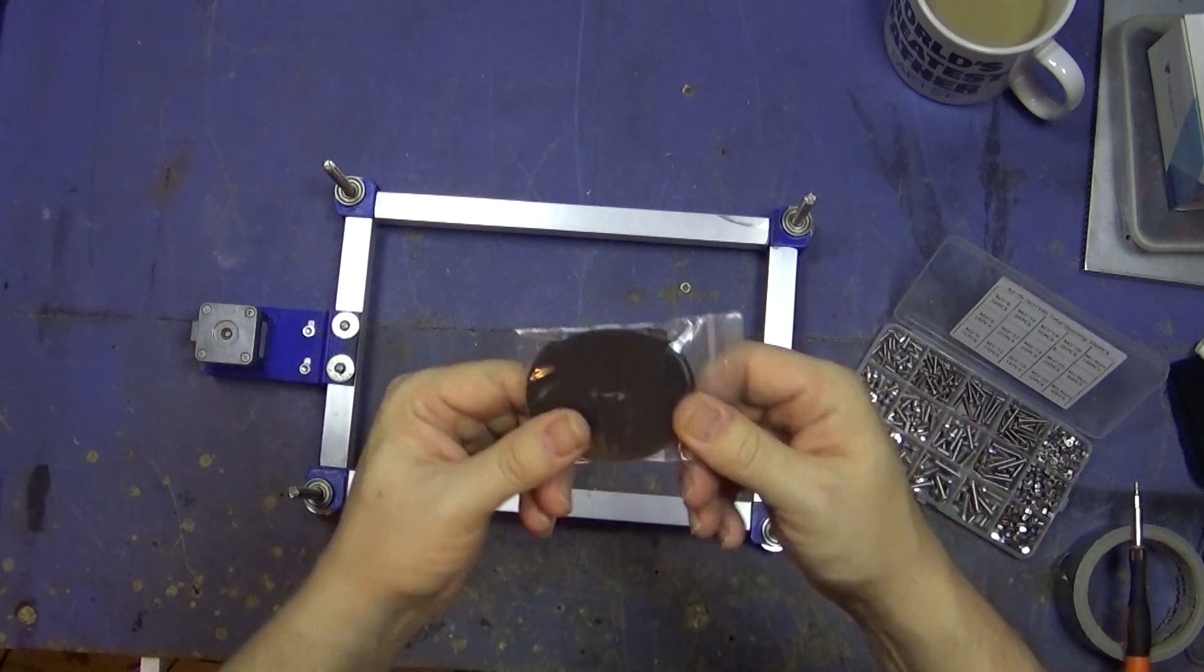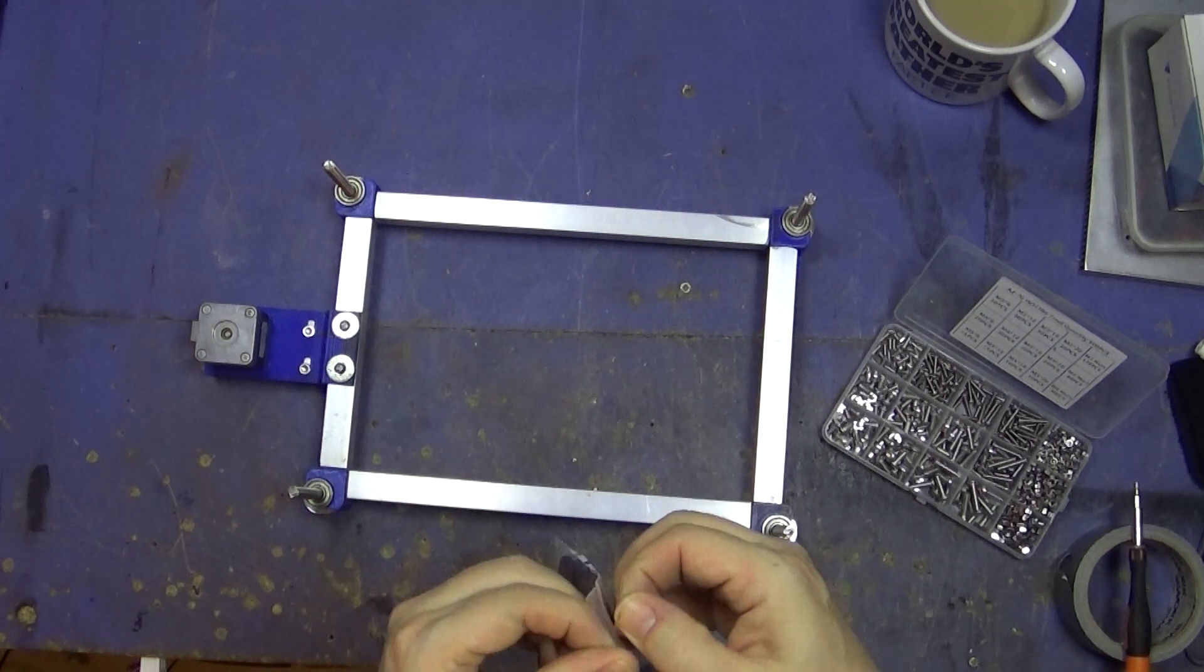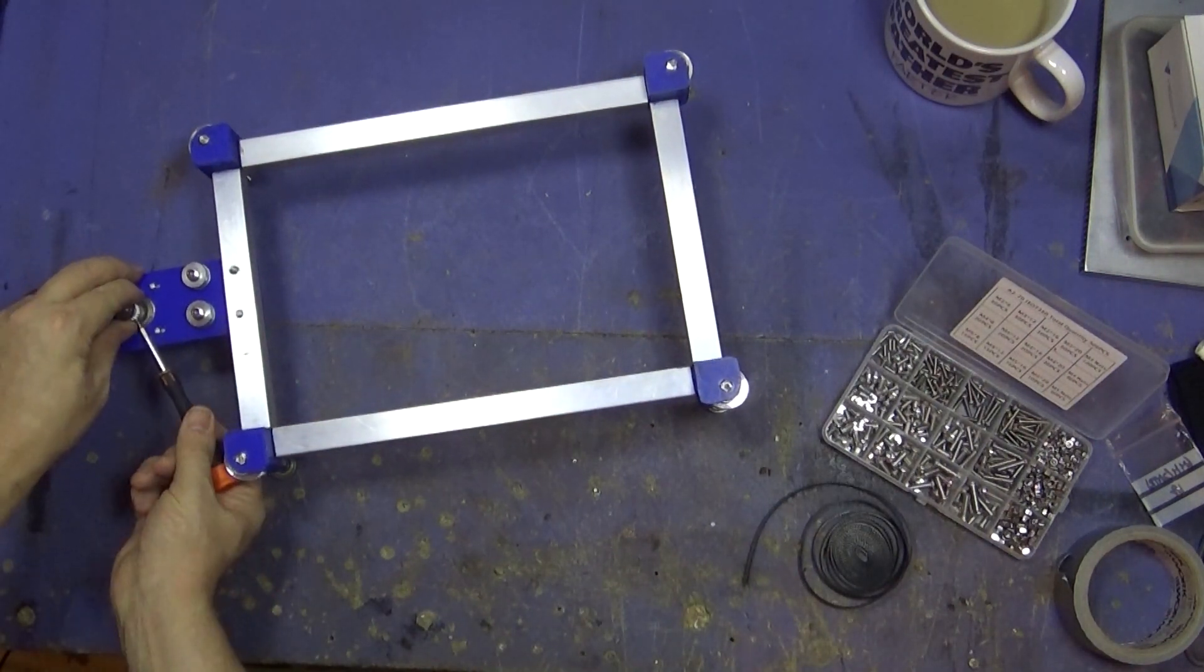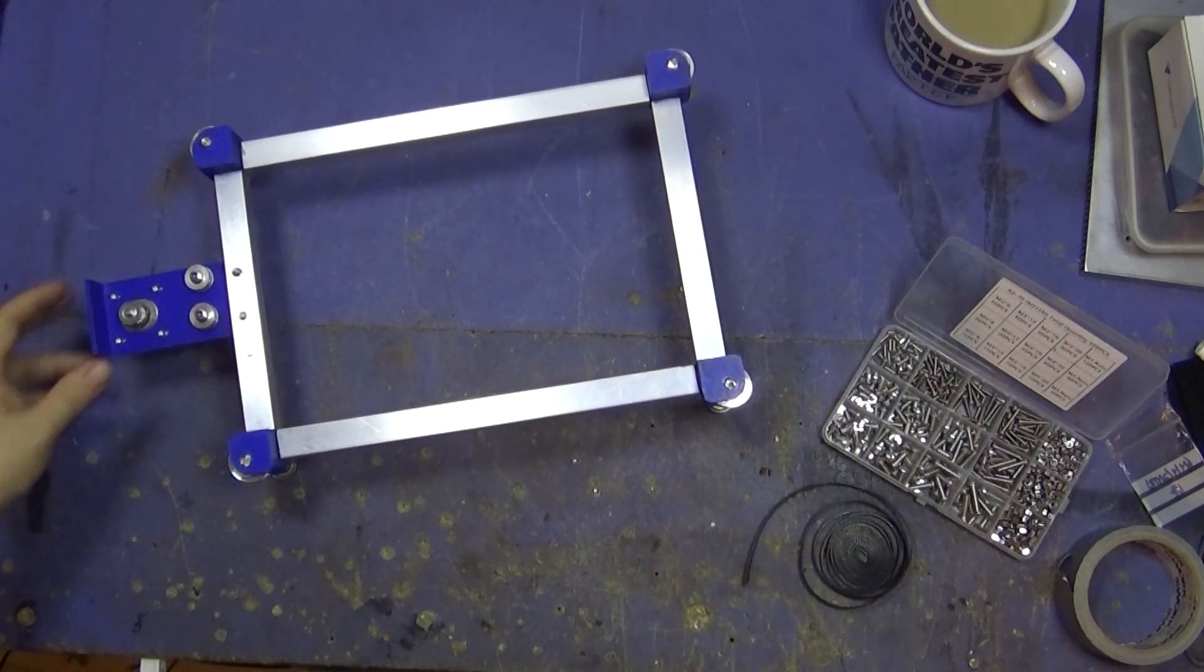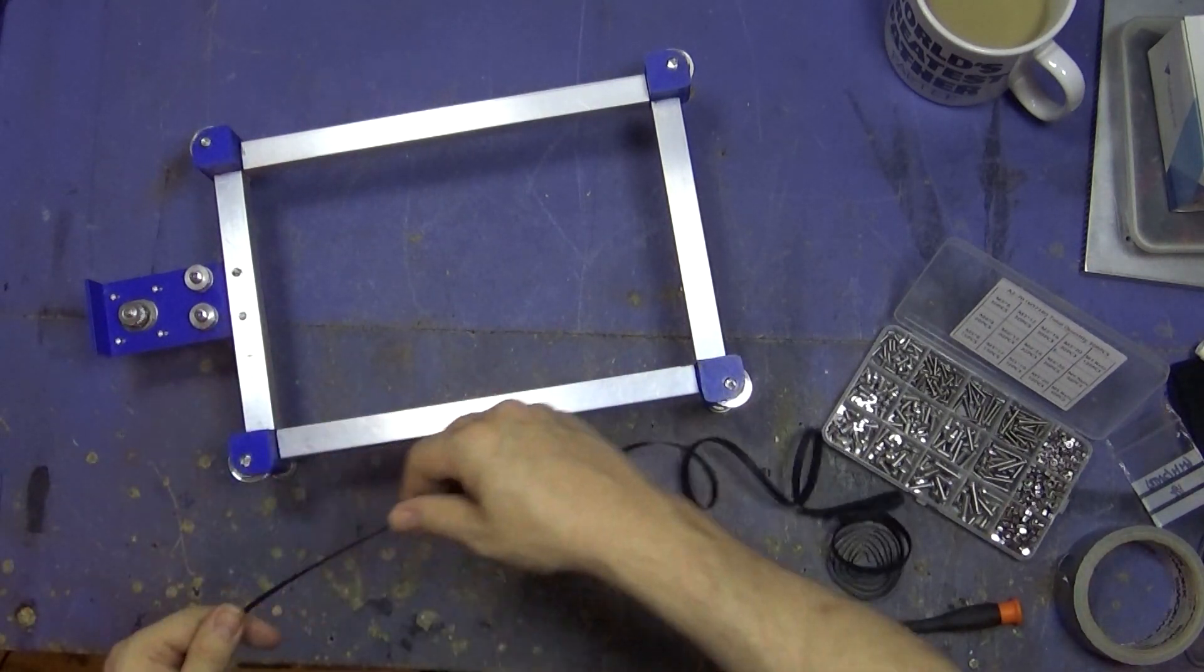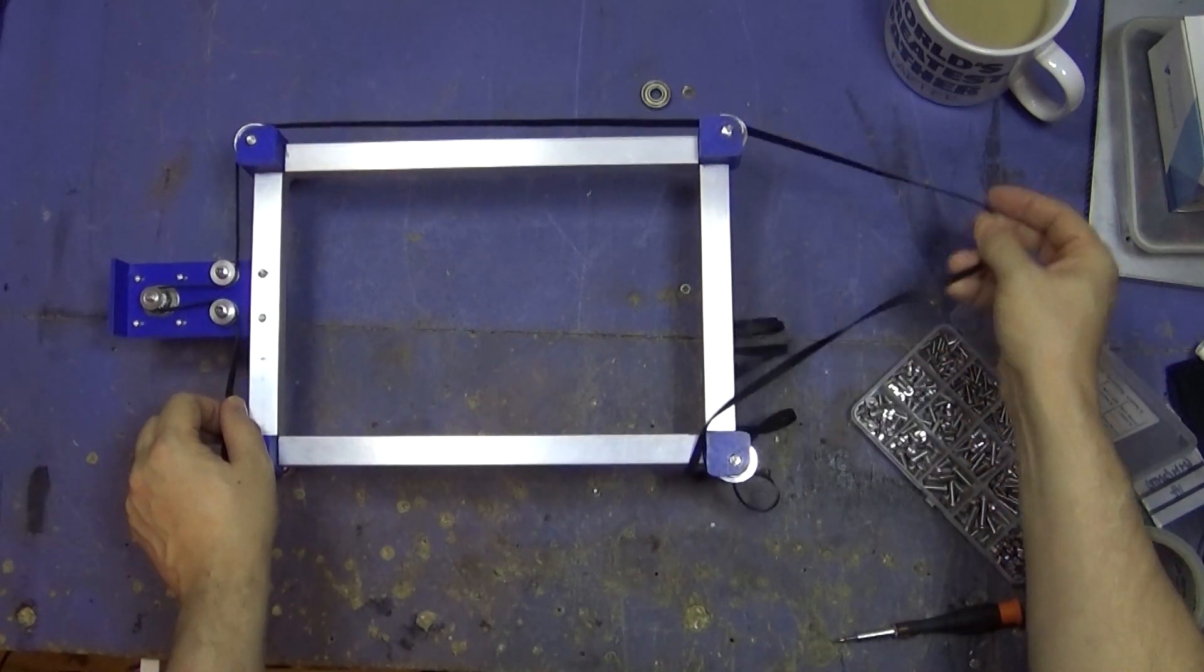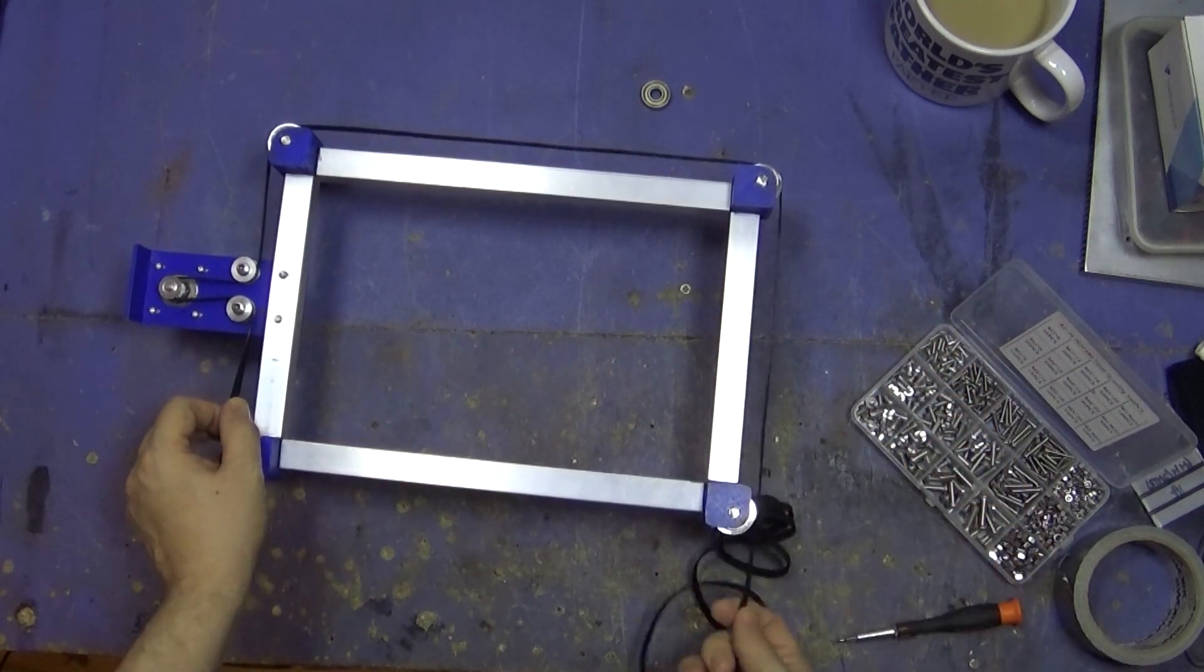One thing I'm very worried about is I just bought the belt and I haven't tested it for size or anything. So yeah, I'm hoping it's long enough. First things first, I need to make this grub screw lower. Now, how did this go? This went like this, didn't it? Another thing I haven't got is something to connect the belt together. So I'm probably just going to bend a bit of wire. Yeah, plenty.